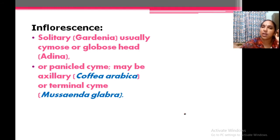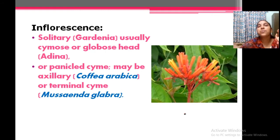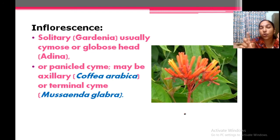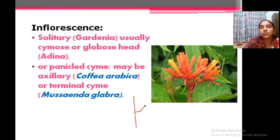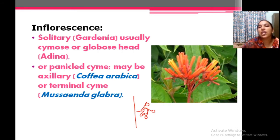This is Haemelia — Haemelia flowers have helicoid cyme. In helicoid cyme, flowers are arranged on one side in an alternate manner along the axis of the inflorescence — one flower here, then next flower here, then next, and so on, and the axis bends. That is the helicoid cyme. So helicoid cyme is present in Haemelia.